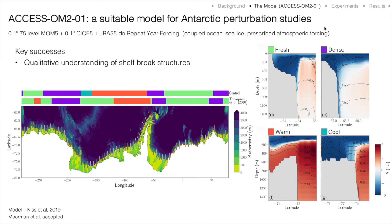To get there we needed an ocean model to work with, so we've used ACCESS-OM2-01, which is an ocean and sea ice model at one tenth of a degree, which around Antarctica ranges from about two to four kilometers in the horizontal grid. It's forced by a repeat year atmospheric forcing extracted from the JRA55-do product, to keep the rest of the system as constant as possible and isolate the ocean's response to the prescribed forcing.